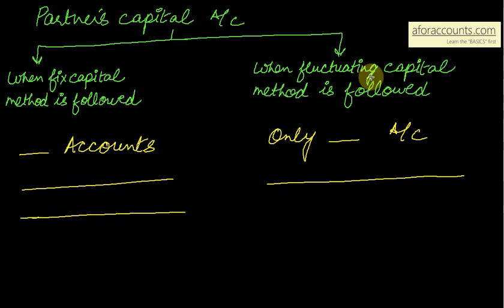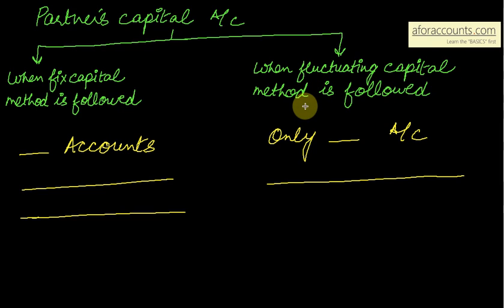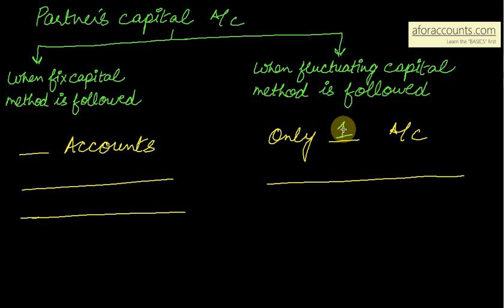First, let's understand what fluctuating capital means. Fluctuating capital means the capital balance keeps on changing, as the name suggests — it will keep on fluctuating. So when you are maintaining capital under the fluctuating capital method, then only one account is maintained. Remember this — it is very important.